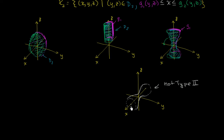You could show that this rotated hourglass is going to be a type 1 region — you could create a domain in the x,y plane and have upper and lower bound functions for z. So it can be type 1, but it will not be type 2.